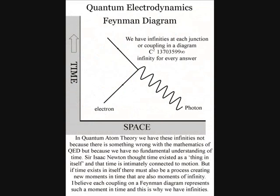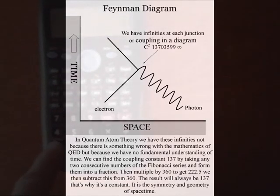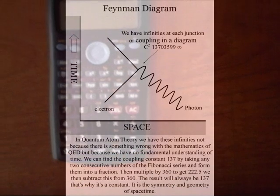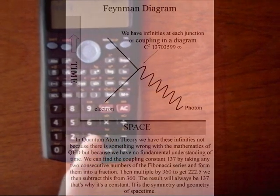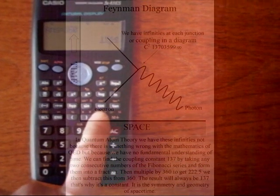Richard Feynman, in one of his physics lectures, said that every theoretical physicist is trying to find a reason for the fine structure constant 137. The fine structure constant 137, or the coupling constant alpha, is an irrational number that never ends and continues into infinity. This theory predicts that the fine structure constant is a geometrical constant in the physical process that forms the dynamic geometry of space-time, and is the size it is because if you take any two consecutive numbers of the Fibonacci series greater than the number 8 and form them into a fraction, if you then multiply by 360 to get 222, and then subtract this from 360, the result will always be 137. It is a constant in the dynamic geometry of space-time.